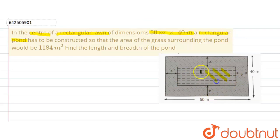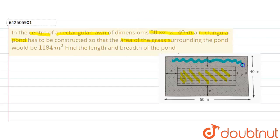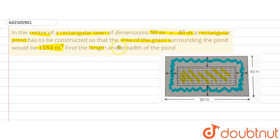This is the rectangular pond which is at the center of the rectangular lawn. We are given the area of the grass surrounding the pond — that is 1184 square meters. We are supposed to find the length and the breadth of the pond. We are given the length and breadth of the lawn and need to find the length and breadth of the pond.